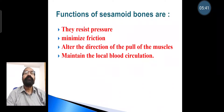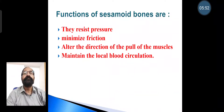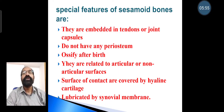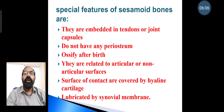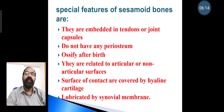The functions of sesamoid bones are: they resist pressure, minimize friction, alter the direction of the pull of muscles, and maintain local blood circulation. The special features of sesamoid bones are: they are embedded in tendons and joint capsules, do not have any periosteum, ossify after birth, are related to articular or non-articular surfaces, their surfaces of contact are covered by hyaline cartilage, and are lubricated by the synovial membrane.